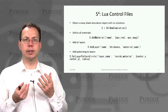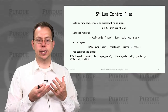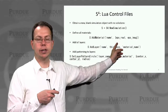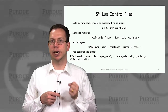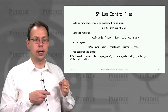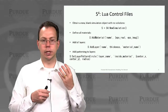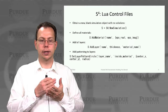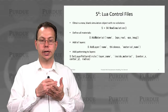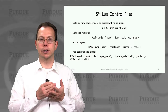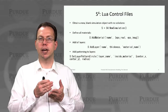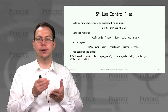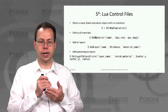Then you have to define the materials you're using in the system. For each material that you name with whatever name you want, it has a real and imaginary epsilon component. Then you would add layers to this structure. These layers would have their own names, their own thickness, and could be made out of material defined previously. You could reuse the same material over and over again for unique different layers.